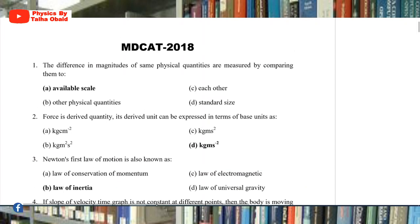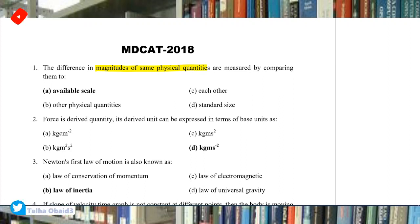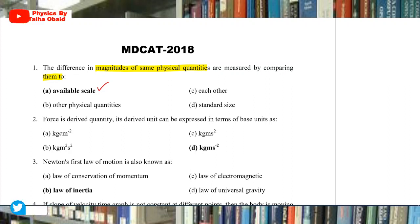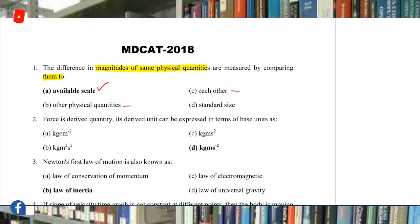The first question: the difference in the magnitudes of the same physical quantities are measured by comparing them to — the correct answer is 'available scale'. If we compare one with one, we cannot measure the difference. We cannot compare other physical quantities. If we compare the standard size, then we can do the absolute value. If we compare the same physical quantities, then we need a minimum scale.